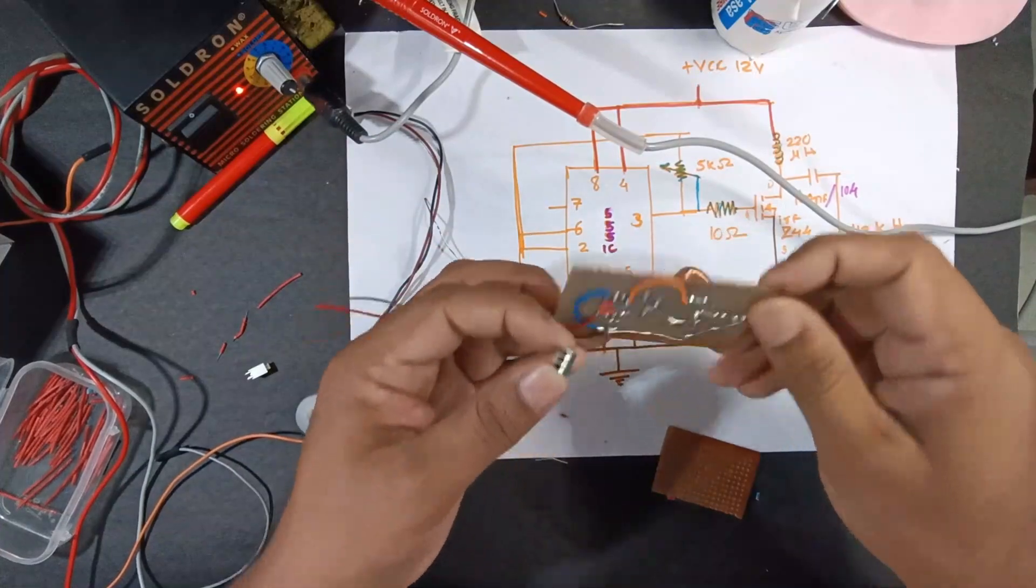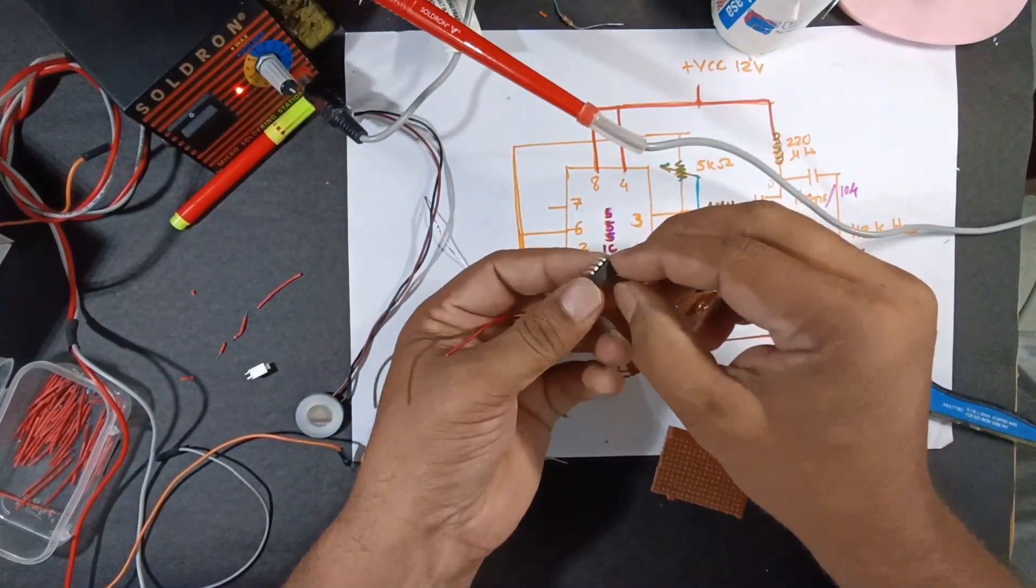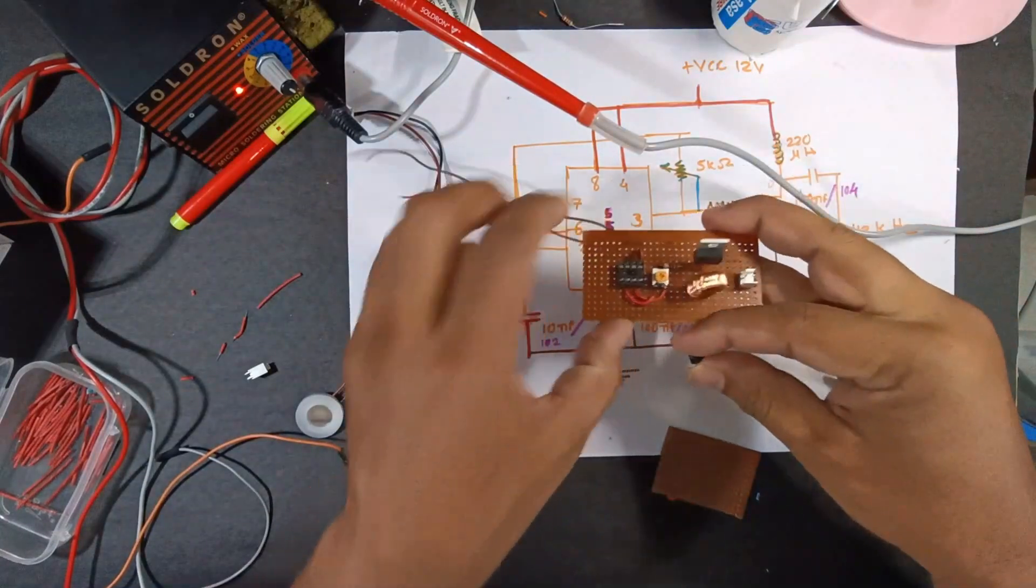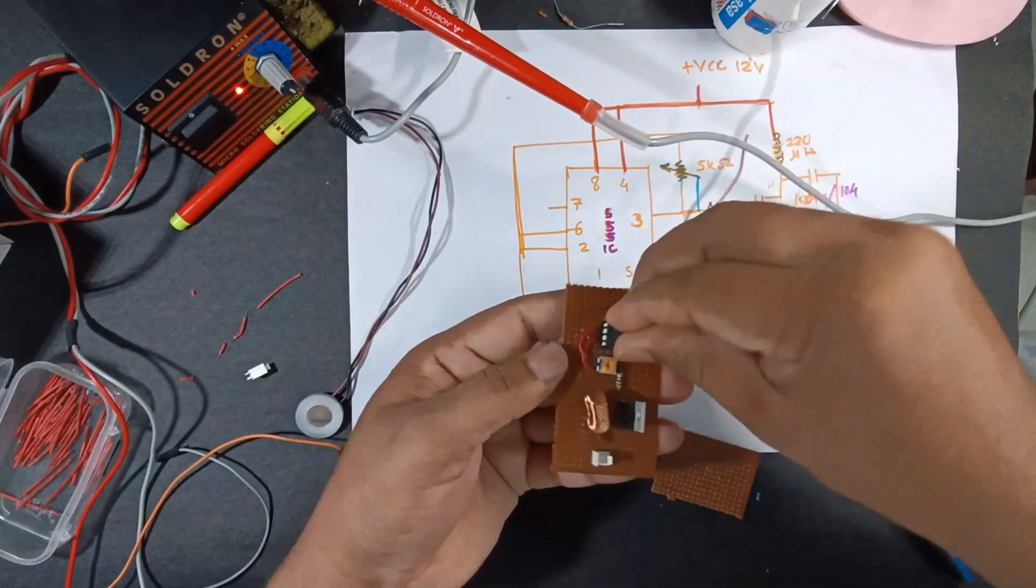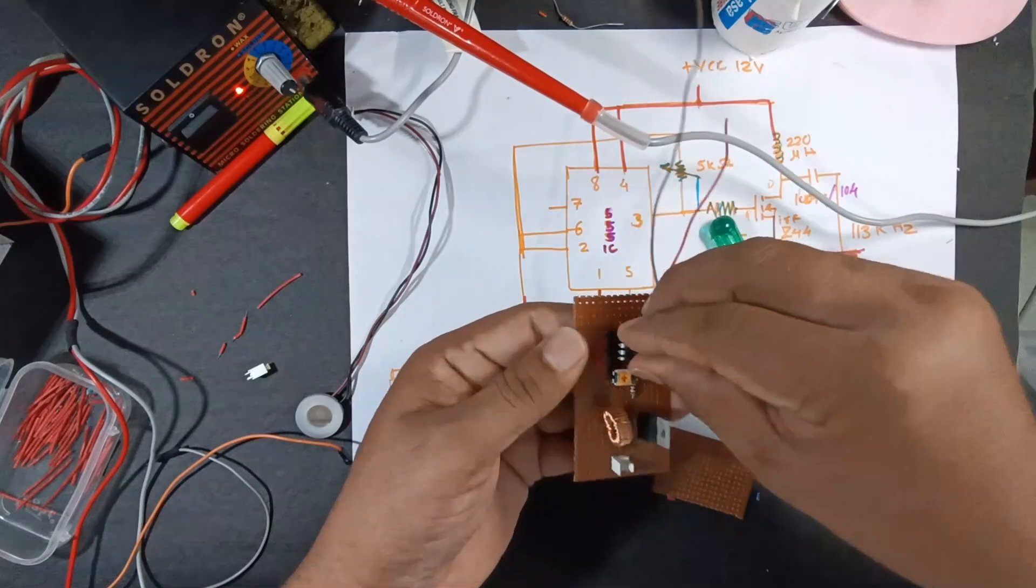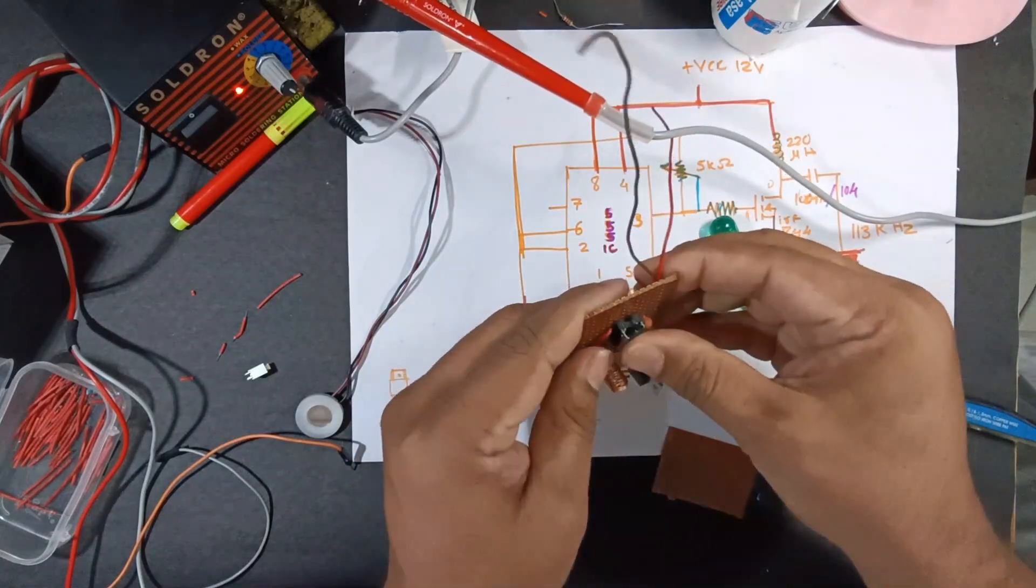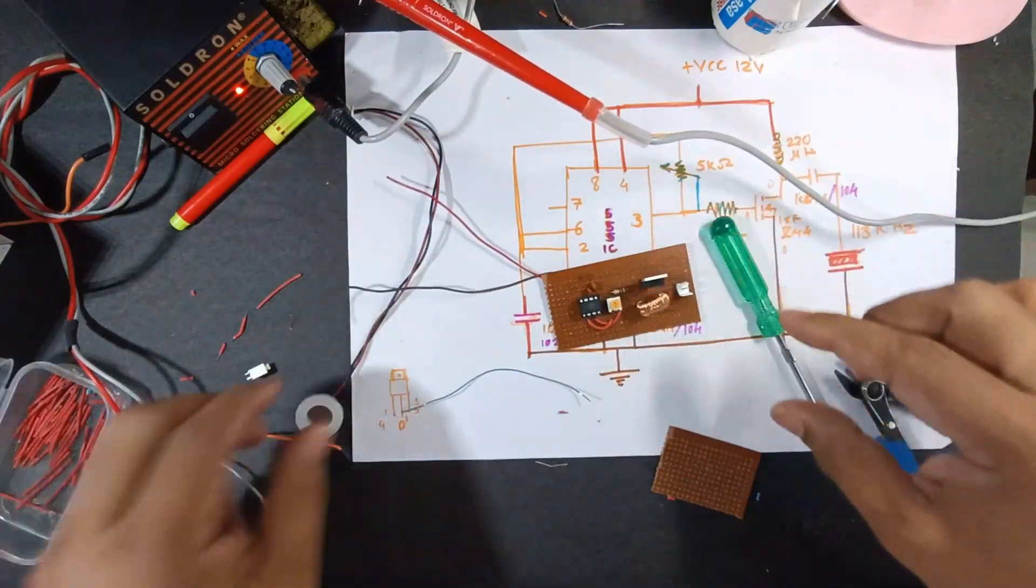So friends, as we have finished with all the soldering stuff, so let us put IC 555 into the base. Okay, so I put the IC 555 into the base.